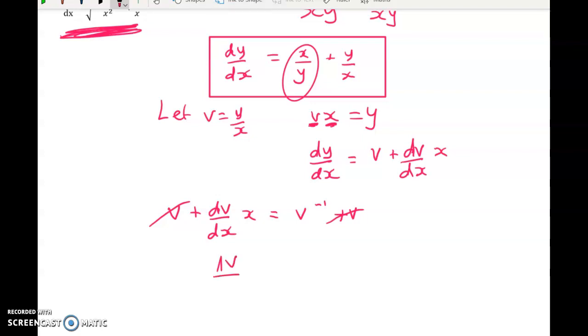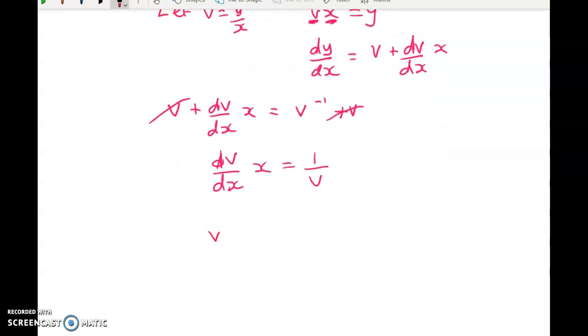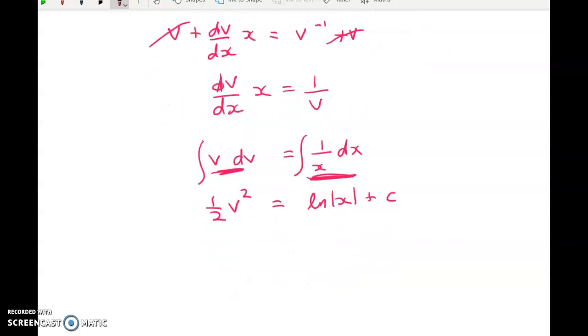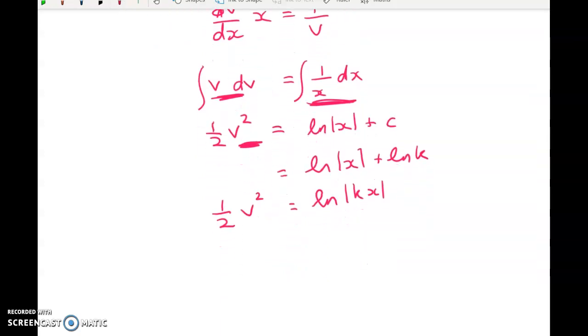So we've got dV by dx times x is equal to one over V, giving me V dV is equal to one over x dx. And I can integrate both sides. So when I integrate this, I get one half V squared. And when I integrate this, I get the natural log of x, the absolute value of x, plus call it C, which we can write as the natural log of x plus the natural log of some constant K. So that equals the natural log of Kx. Now you could have done this with putting your plus C here. You'll just get a different kind of mess to clean up. It doesn't matter too much, right? But you'll see when you go on and you do lots of these, you'll see that most of the time people do it this way because you end up getting the log expression all sitting nicely in here.